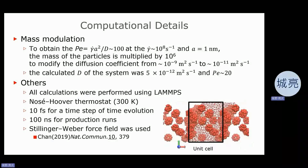Based on the rule of thumb, to obtain a Peclet number of 100 at gamma-dot equals 10^8 per second, and the representative length is 1 nanometer, the mass of the particle is multiplied by 10^6 to modify the diffusion coefficient from 10^-9 to 10^-11. In this situation, the calculated diffusion coefficient of the system was 5×10^-12 m²/s, and the Peclet number is 20 at the shear rate gamma-dot equals 10^8 per second.